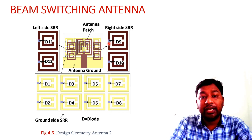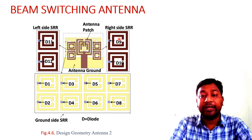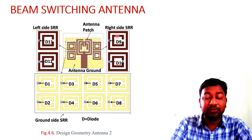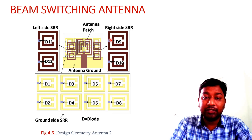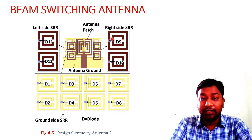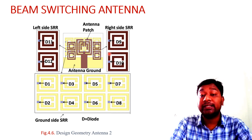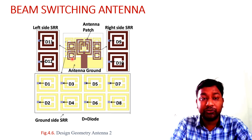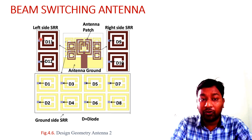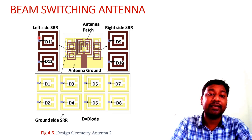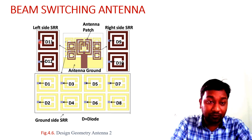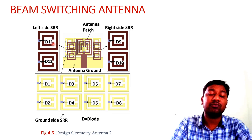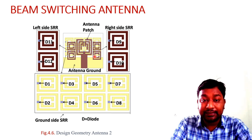To switch the beam, we use ideal diodes. Pin diodes could also be used, but their biasing configuration adds complexity. When a diode is in the ON condition, the SRR does not act as a mu-negative metamaterial in that band. When the diode is OFF, the SRR works as a mu-negative metamaterial. By switching particular SRRs on and off, we can steer the beam.